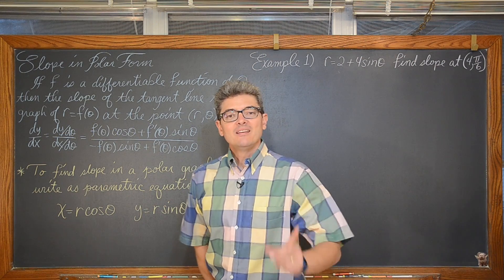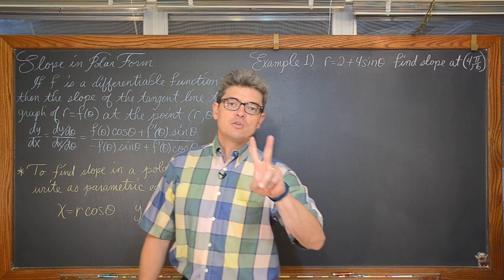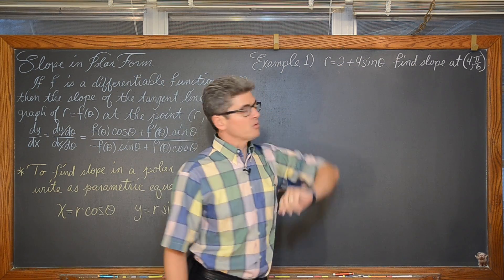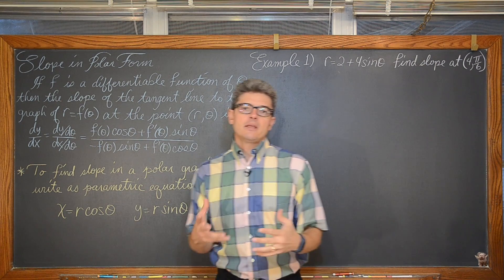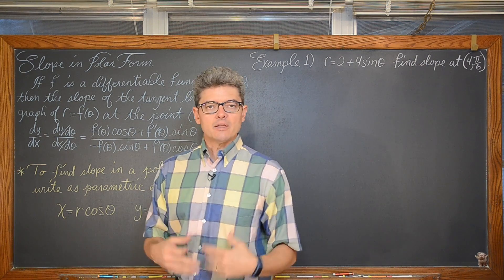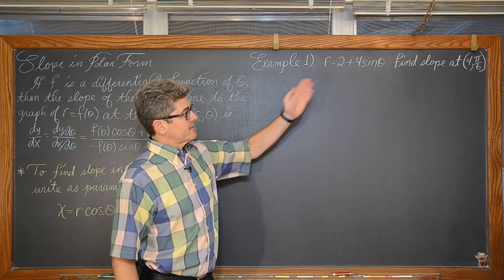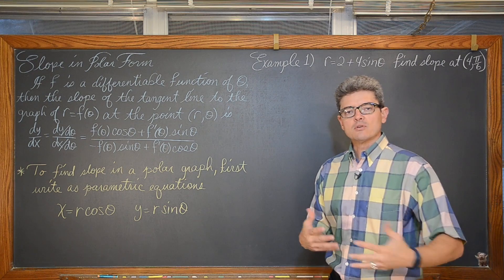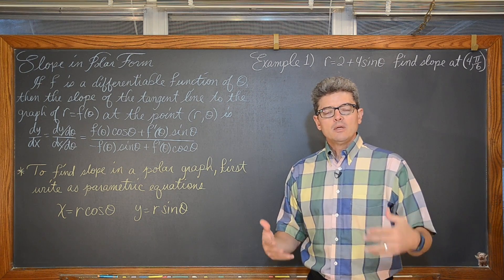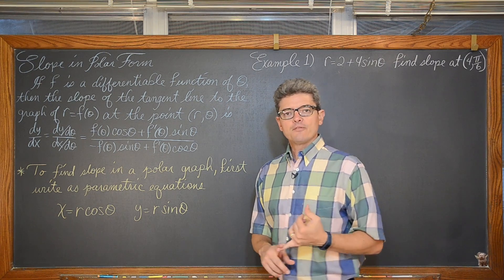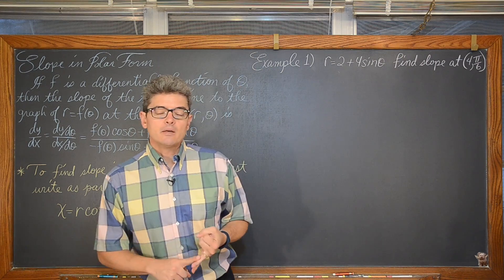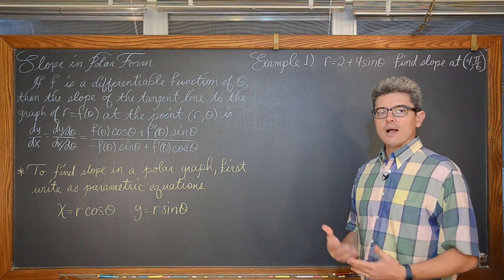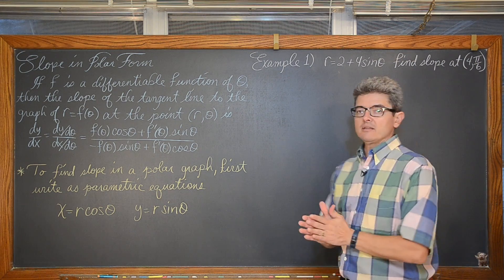BAM! Mr. Tarrou. In this calculus lesson we are going to do a two-part example where we find the slope of this polar curve at a particular point and then find the equation of the tangent line at that point. I will finish up the video by doing a screen capture using a TI-Nspire where I graph this polar curve and then put the tangent line along with that graph so you can see how they interact and validate the answer that we get.